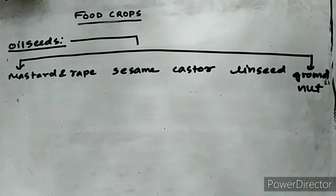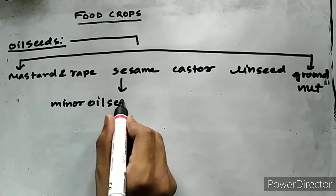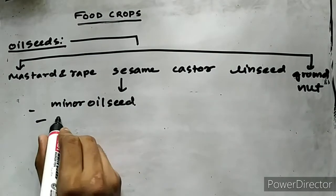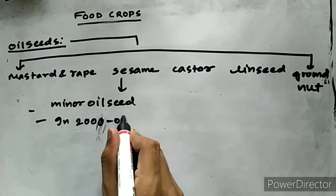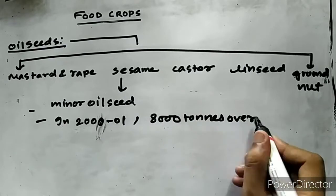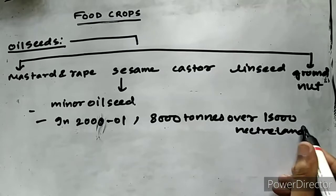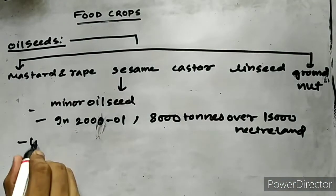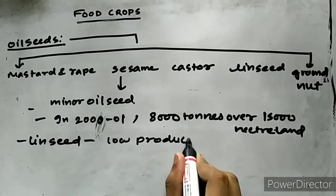Sesame can be called a minor oilseed in Assam from the point of view of its production. In 2000-2001, Assam produced 8,000 tons over 15,000 hectares of land. Only a small quantity of linseed is grown in Assam, especially in Barak Valley. This linseed is also a variety of oilseed in Assam which has very low productivity.